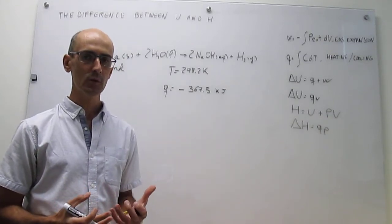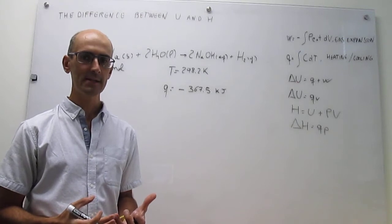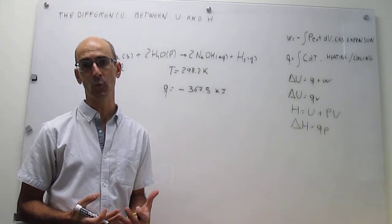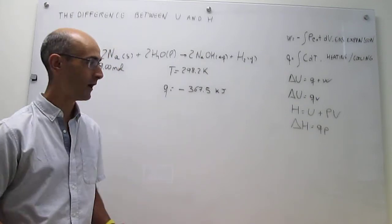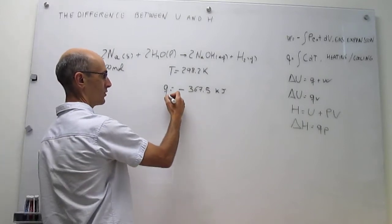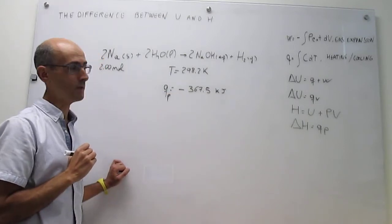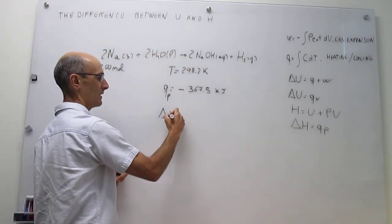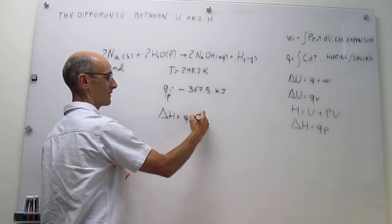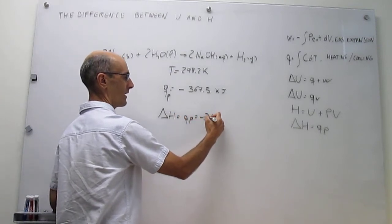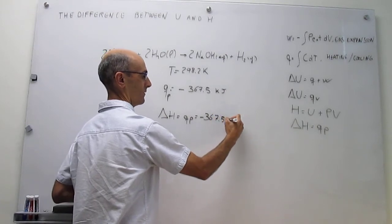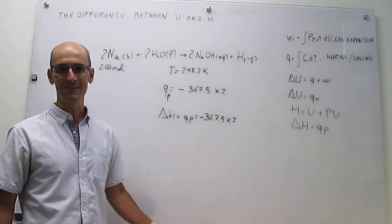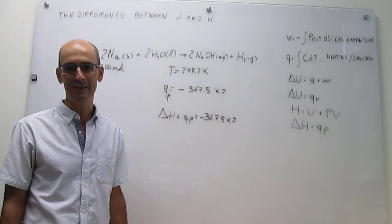This reaction is run open to the atmosphere, and that is a very important detail because if it is open to the atmosphere, that means you are working under constant pressure conditions. So automatically, you know that your Q is Q sub P. And at the same time, you actually also know what delta H is because delta H is equal to the amount of energy released as heat at constant pressure. So the change in enthalpy is a negative number, meaning the process is exothermic.